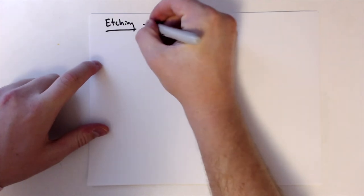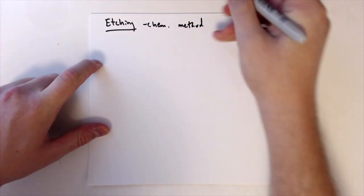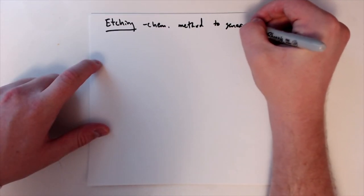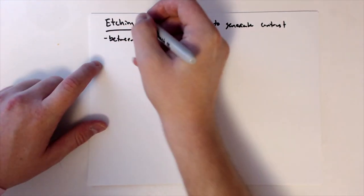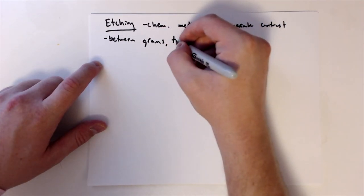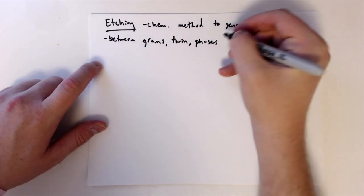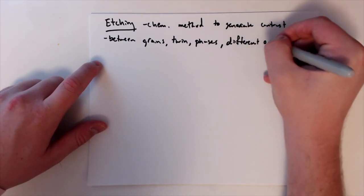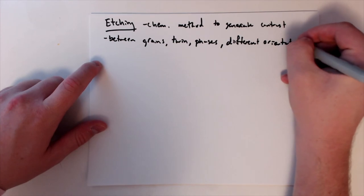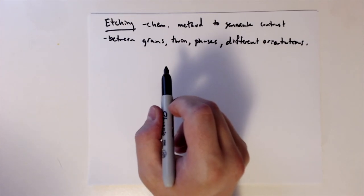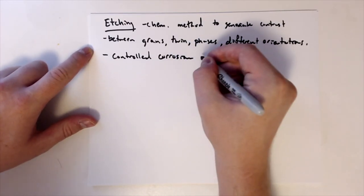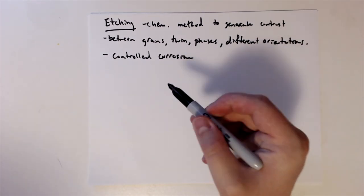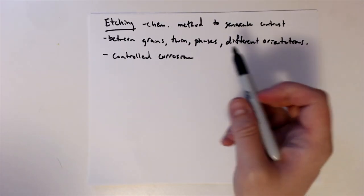Alright, so etching, again, chemical method to generate contrast. And this could be between grains, twin boundaries, phases if we have multiple phases in the material, or even different orientations of crystals. So all these things are things that we could detect on the specimen surface. And etching isn't anything super complicated. All it is is controlled corrosion. So we're controlling the corrosion rate such that we create contrast between different things. So corrosion happens faster in certain areas and it allows us to see one of these features.